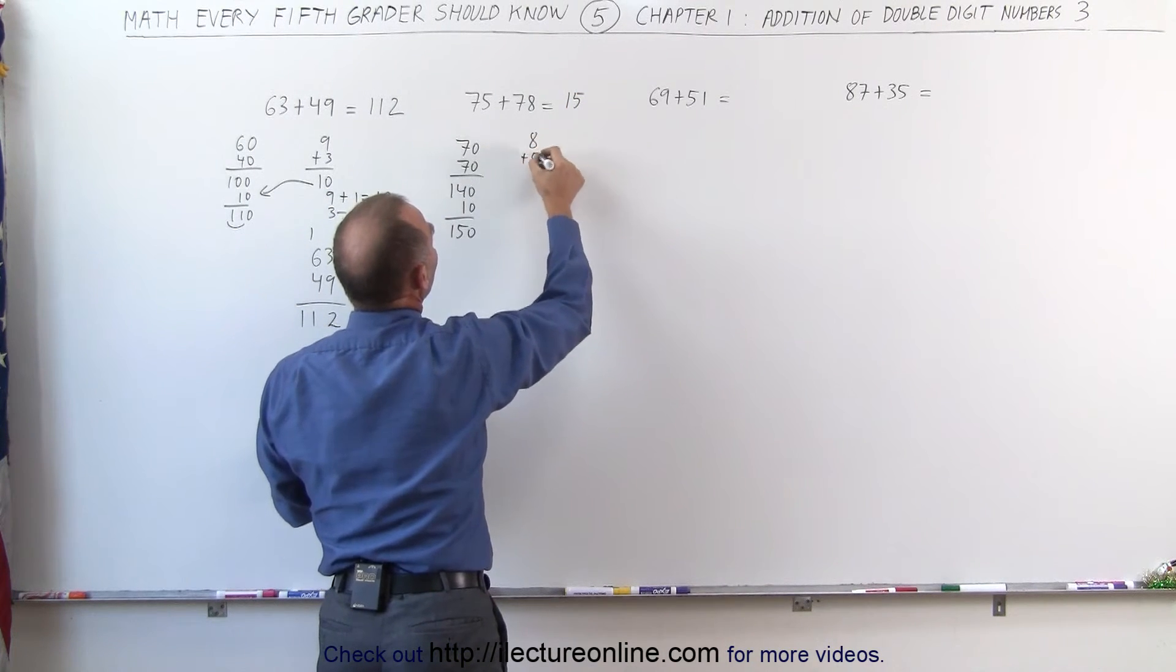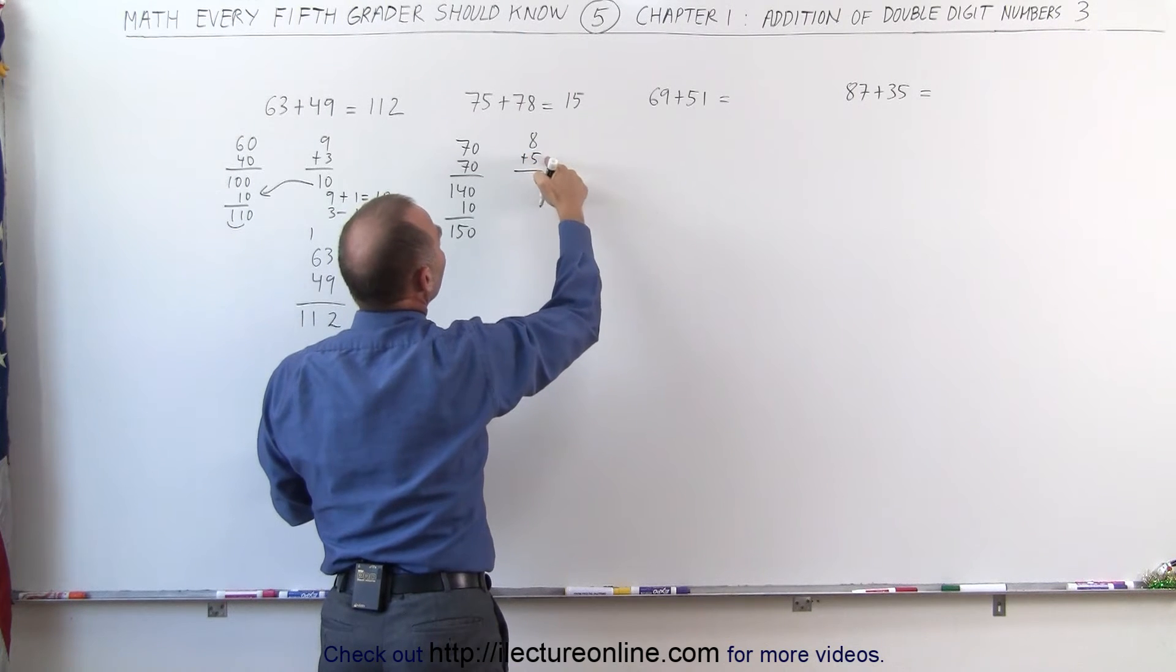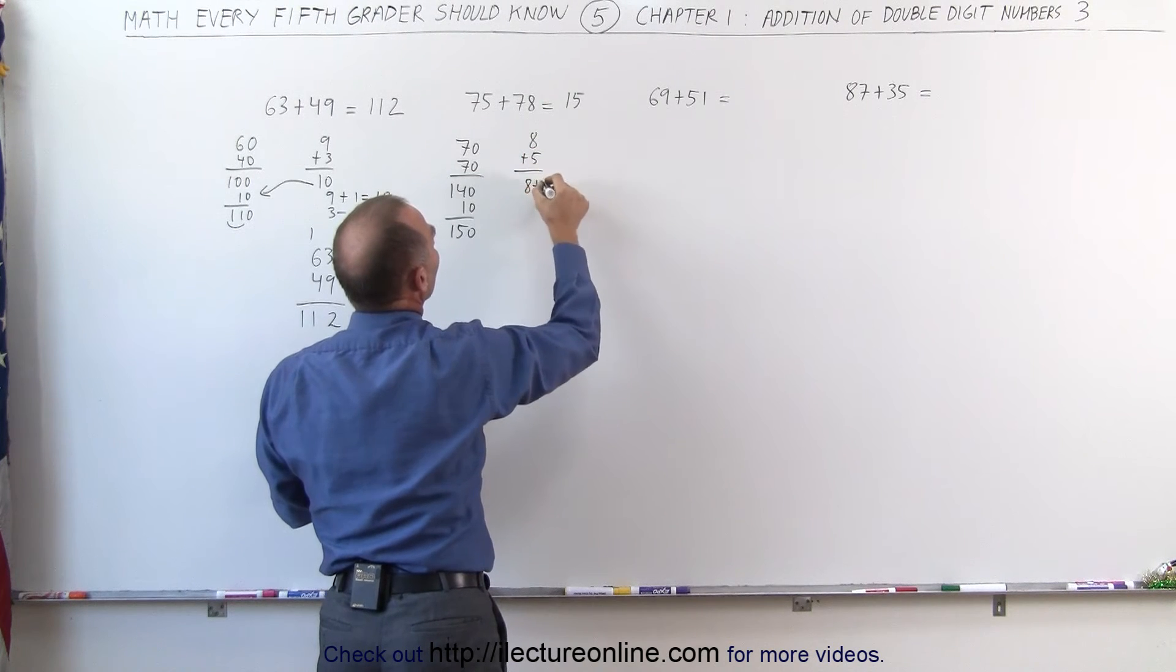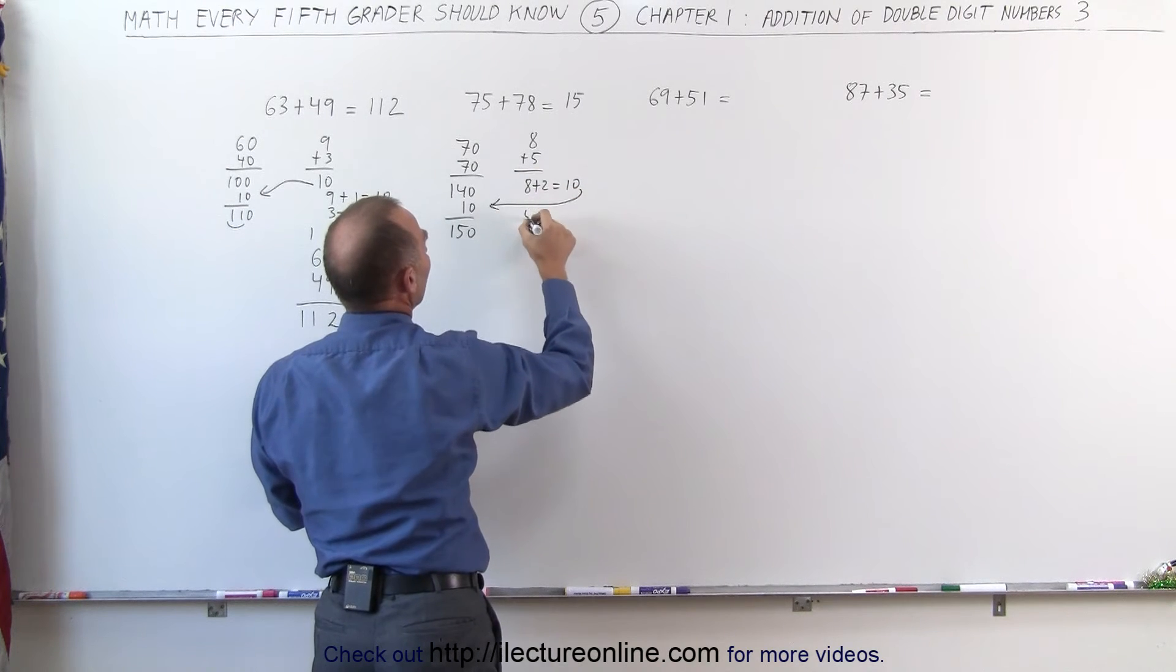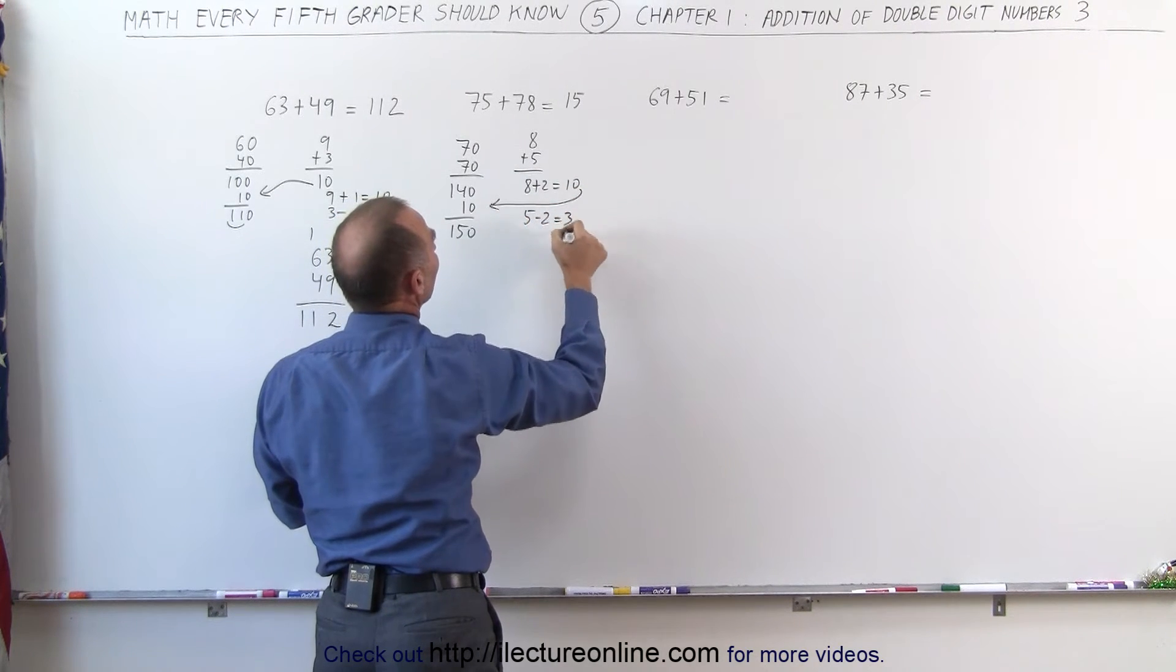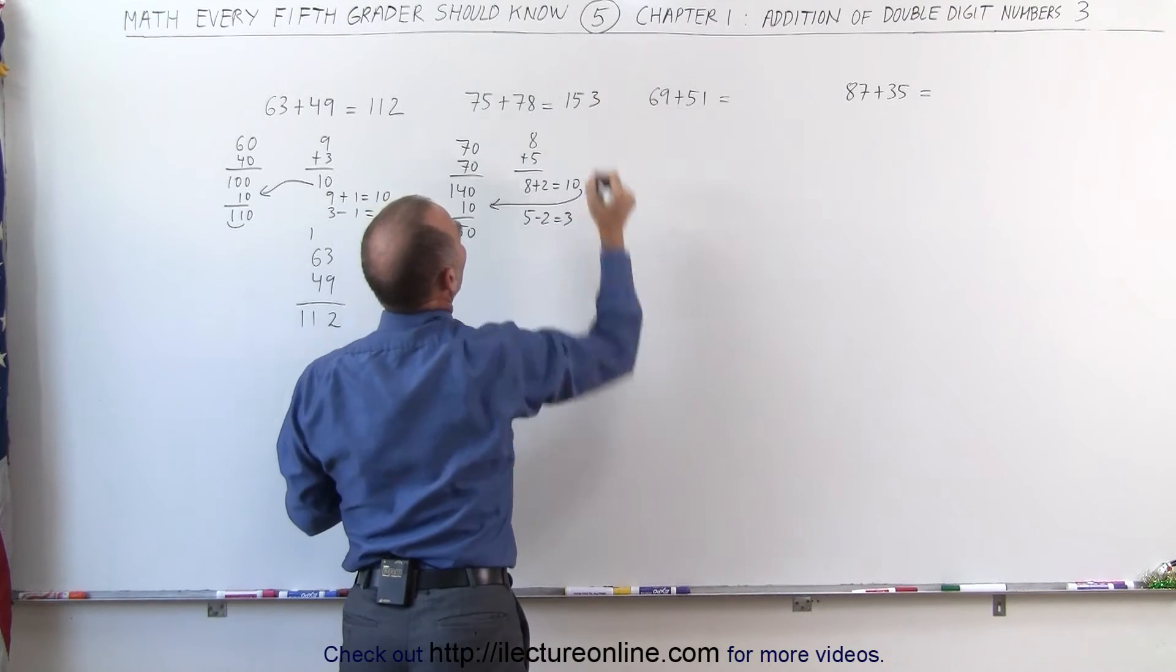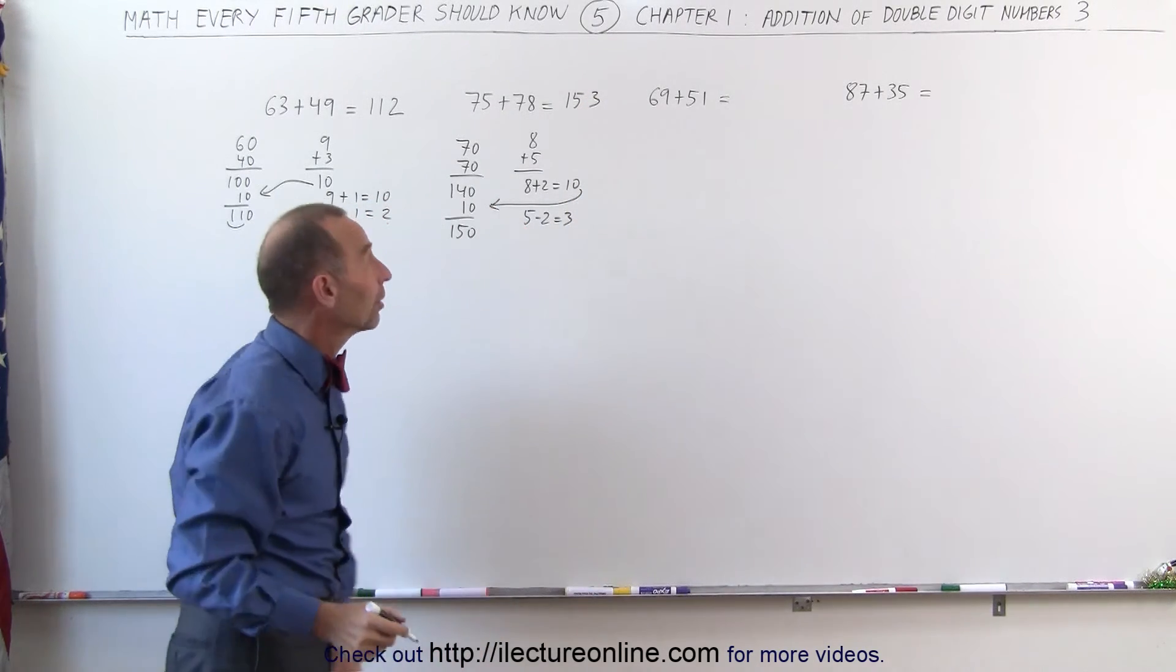Now I add 8 plus 5 together. And 8 plus 5, I need to add 2 more to the 8 to give me 10. That's the 10 that went over here. I subtract the 2 from the 5. That gives me 3. And that number goes over here. It gives me 153.